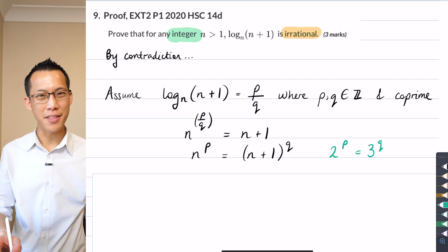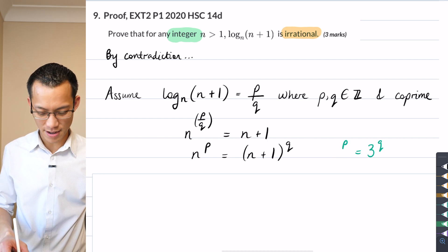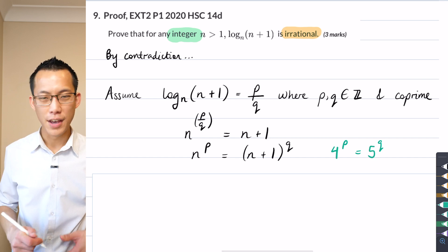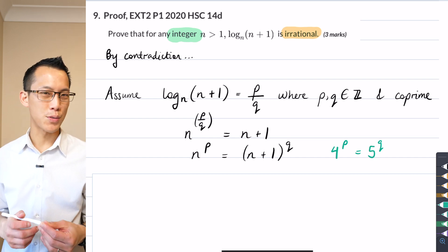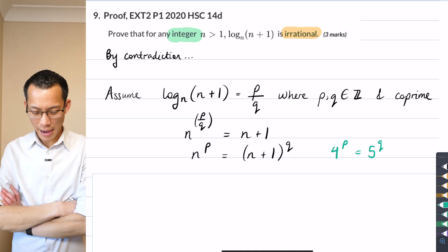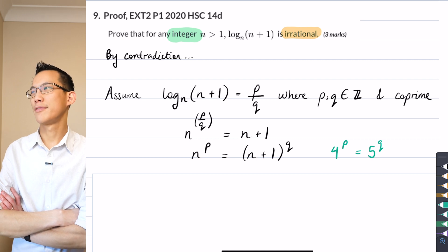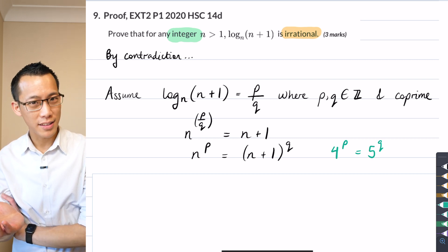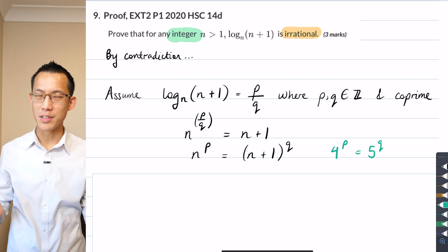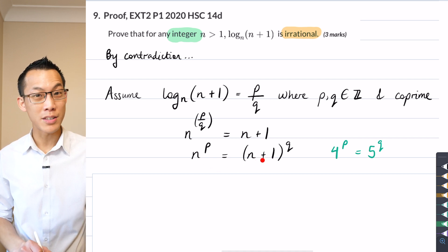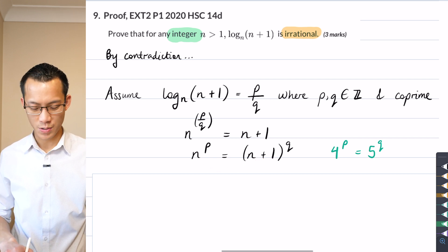And if I chose some other numbers, like say, if I chose 4, then this would be 5. You're going to have the same problem, right? Powers of 4: 4, 16, 64, 256, and then powers of 5: 5, 25, 125, 625. You're getting all evens on the left hand side and all odds on the right. And you have to, because if n is even, then n+1 is odd. And the reverse is also true.